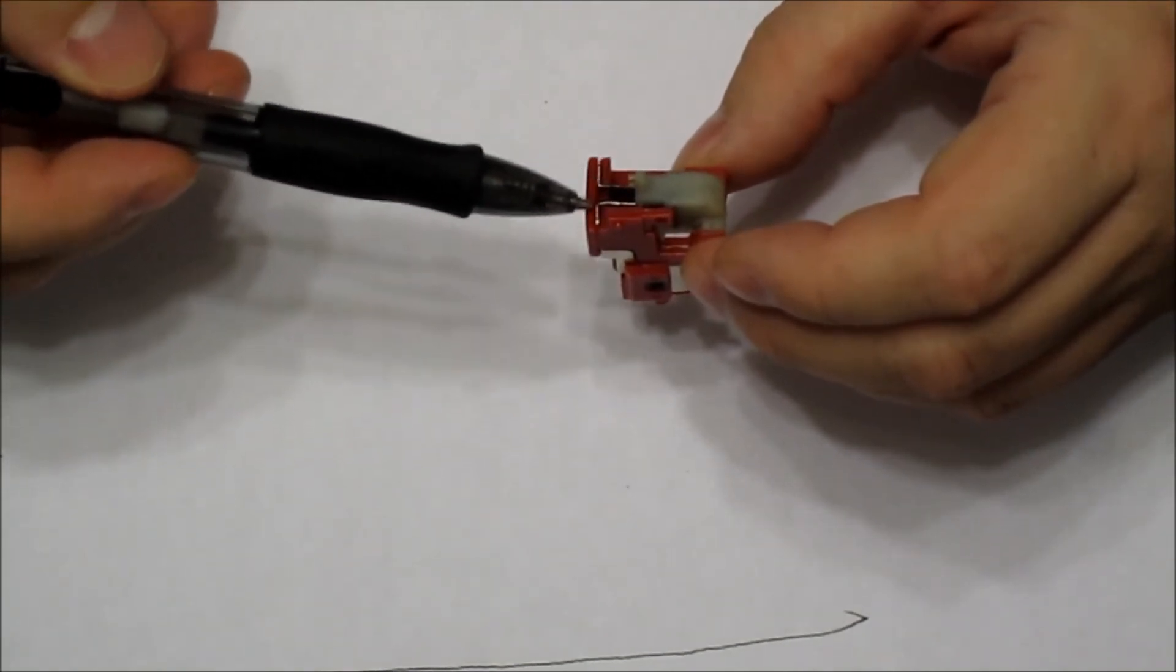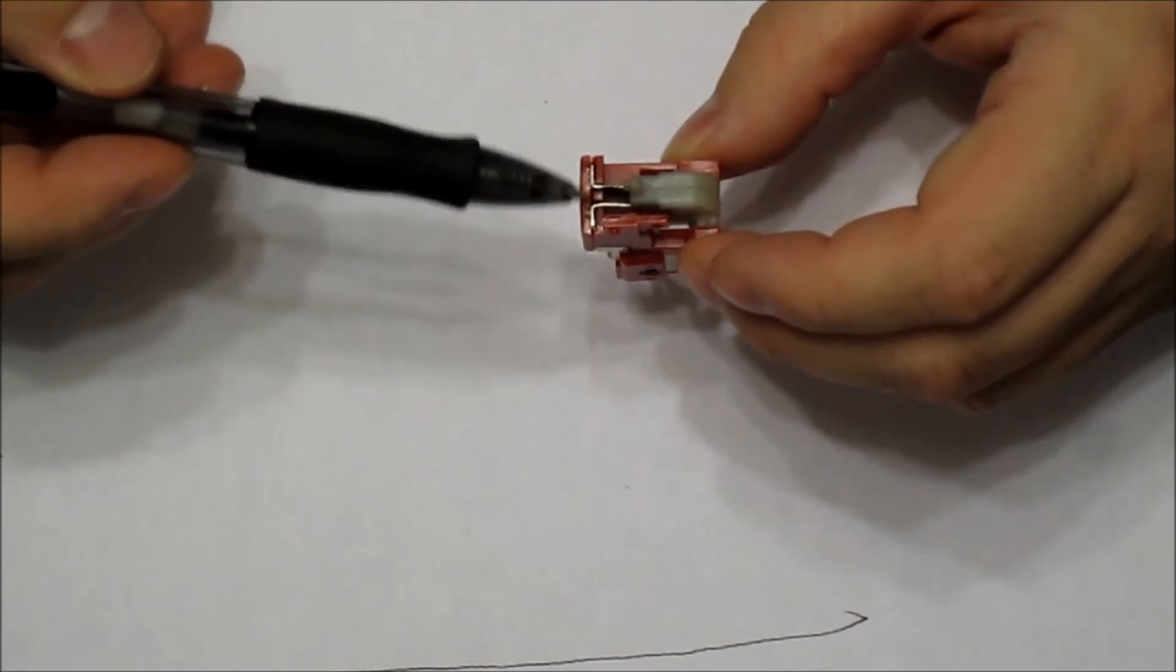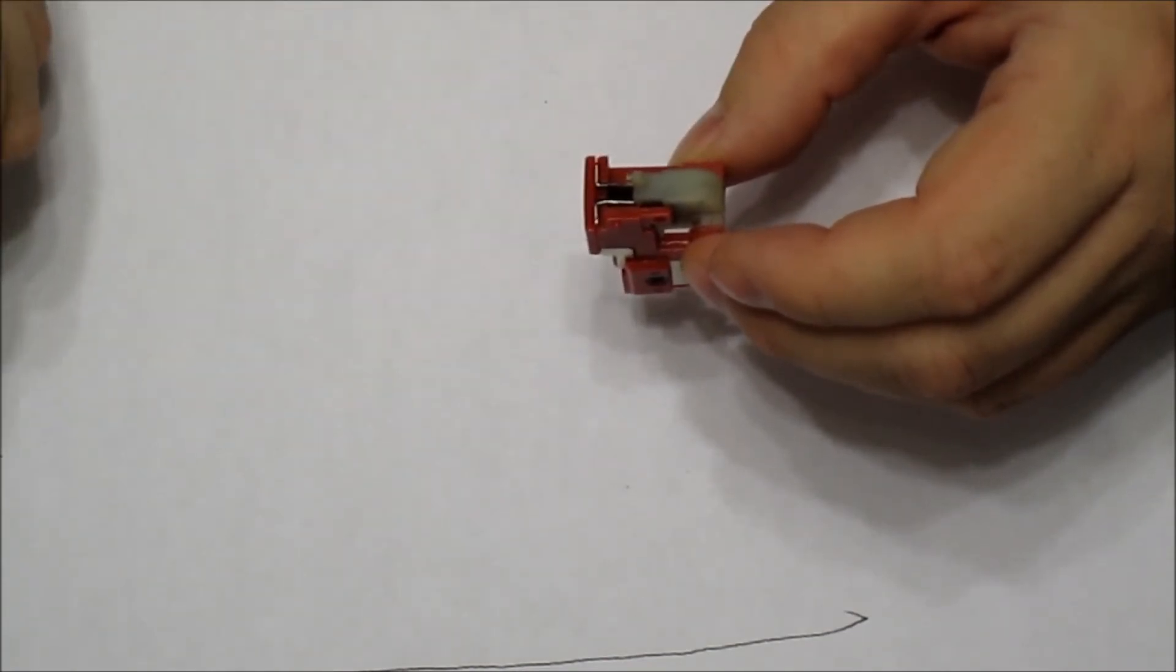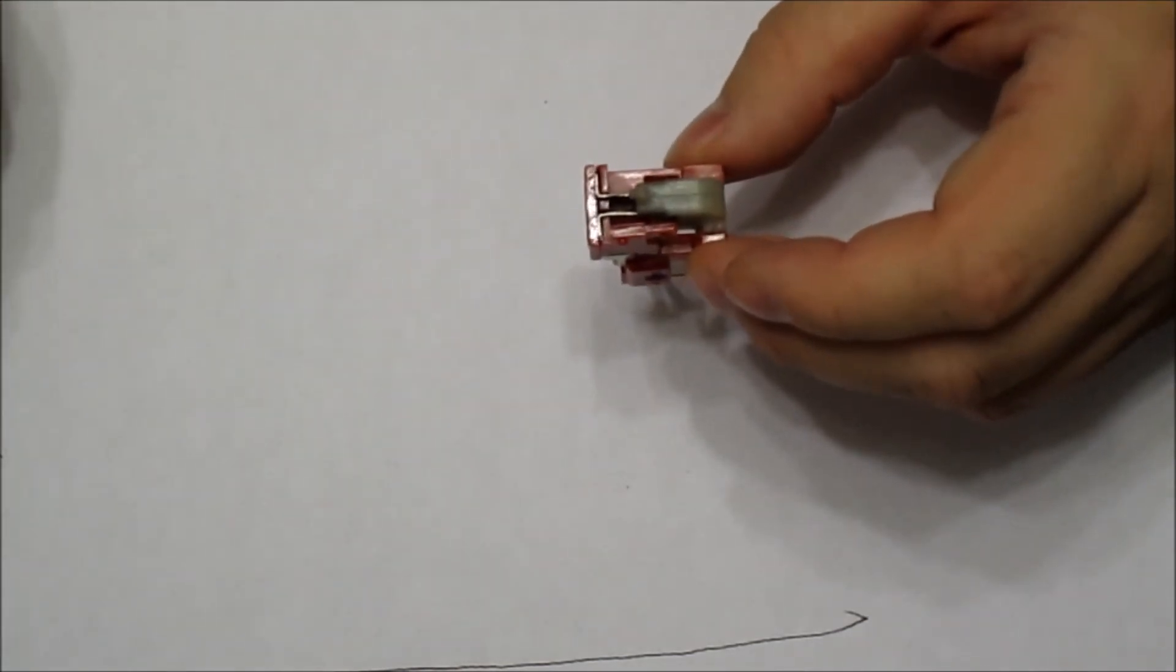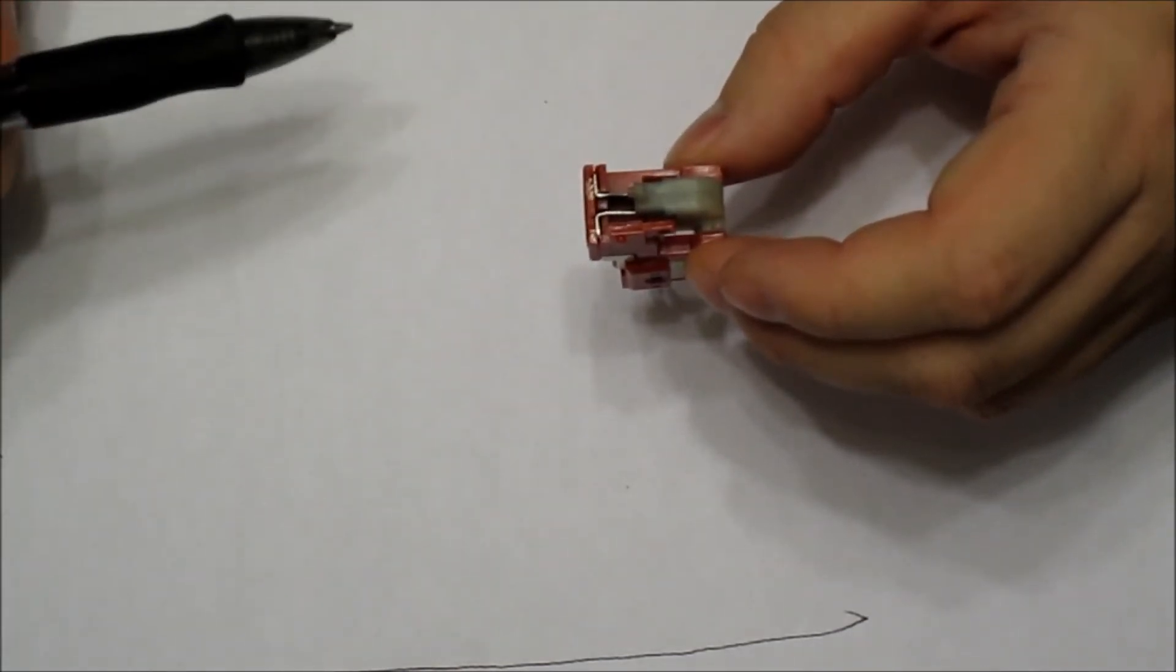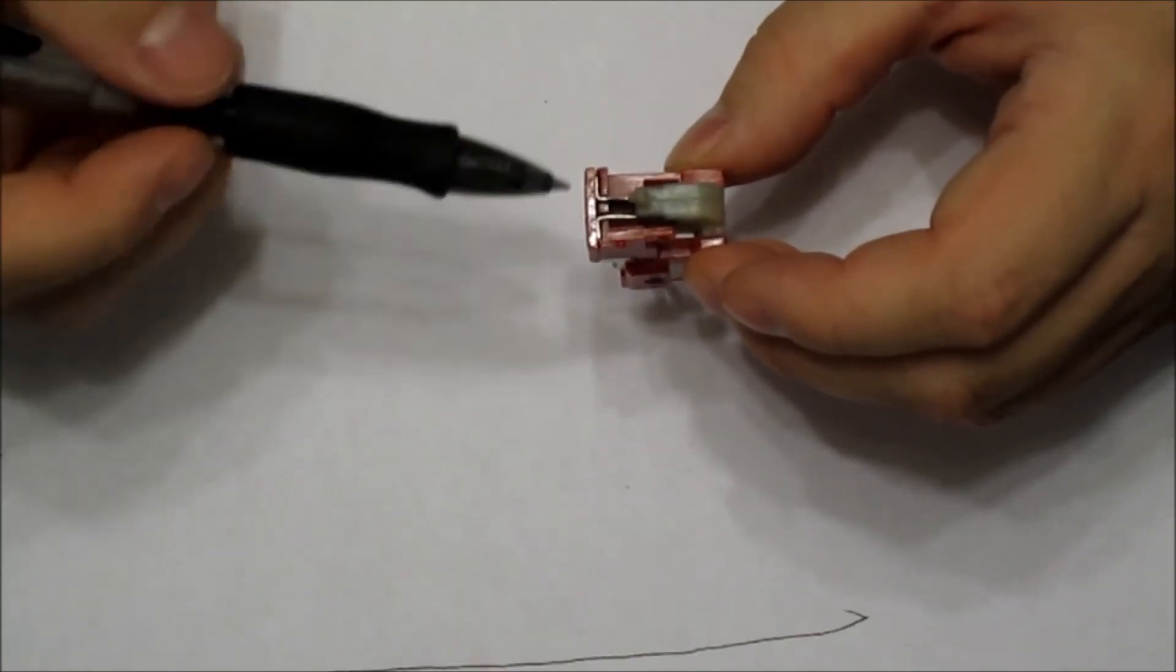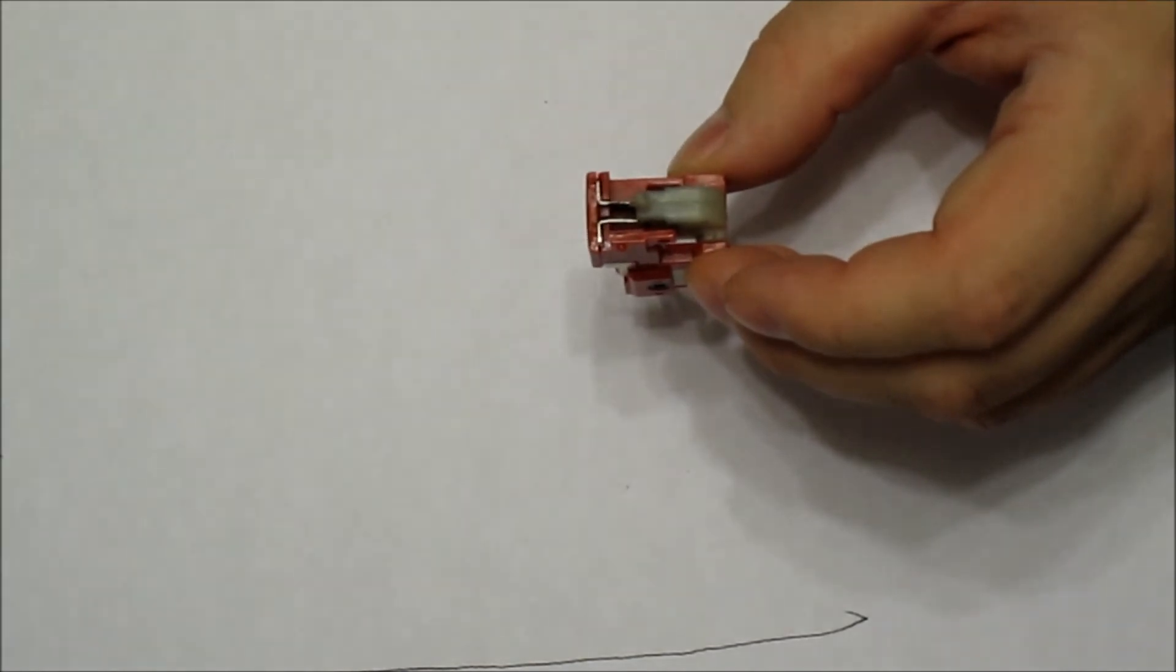What that's going to do is allow these contacts here to move, and when they move it allows them to touch, shorting out the trigger. Now what that means is every time you plug in the battery, the battery is going to turn on right away and it's going to fire, and you have to unplug your battery. There's no way to stop it because these two contacts are touching. That's what you get when you use higher C LiPos.